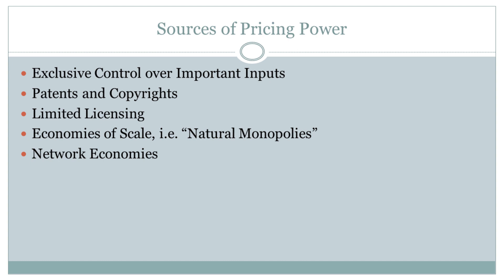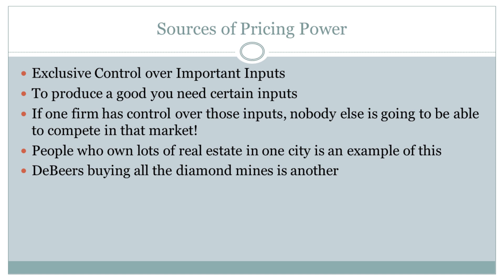Here are the five things that create pricing power — we'll list them out and then go through each one in detail. The first is exclusive control over important inputs. The second is patents and copyrights. The third is limited licensing. The fourth is economies of scale, also known as natural monopolies. And finally, we have network economies or network goods. So let's talk about what each of these things are, starting with exclusive control over important inputs.